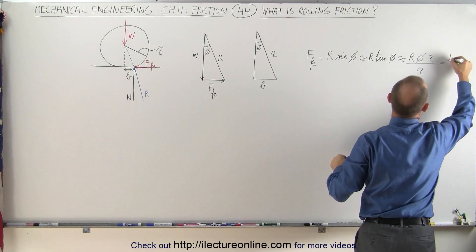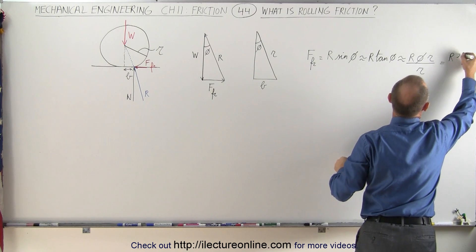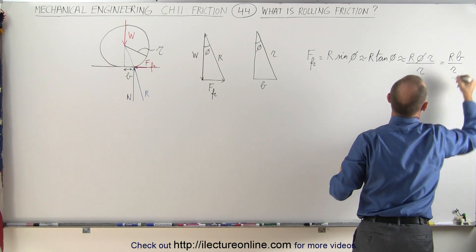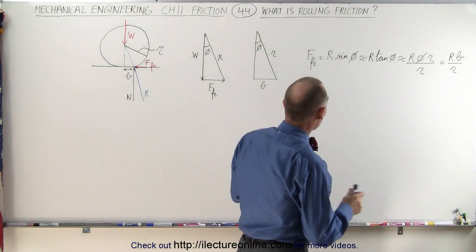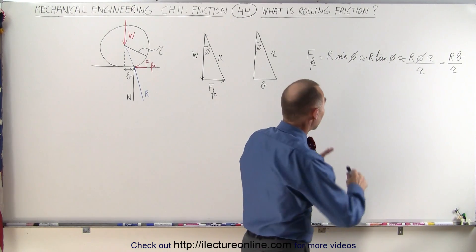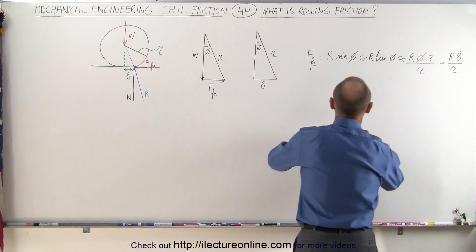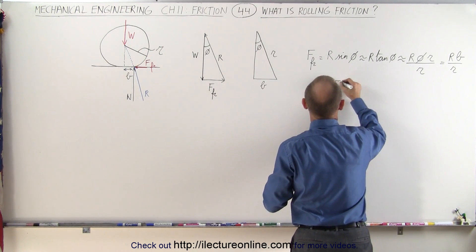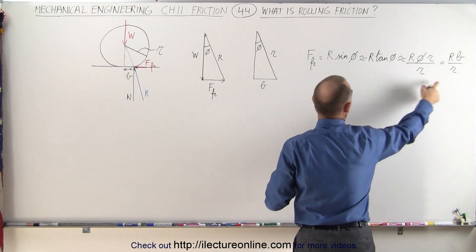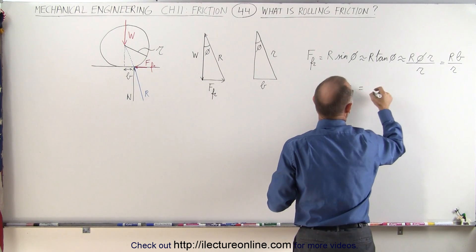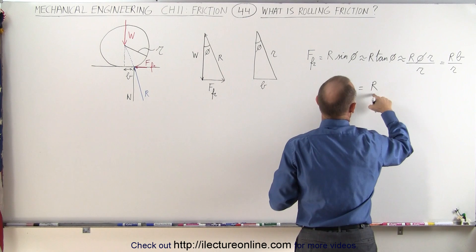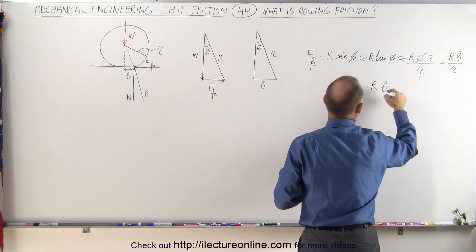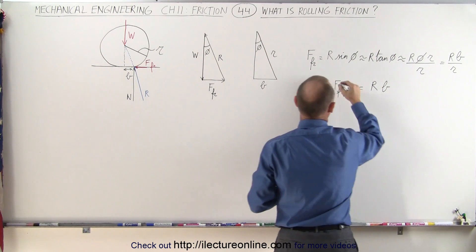So this can be written as R times B over little r. Writing that equation in a simpler format: the friction force times the radius of the wheel is equal to the reaction force times the coefficient of rolling friction.